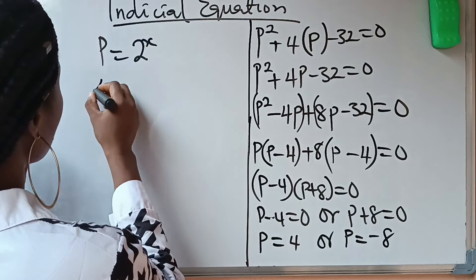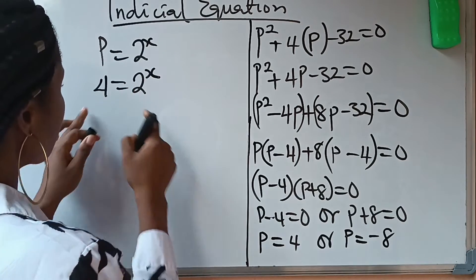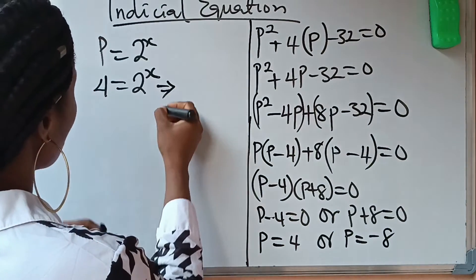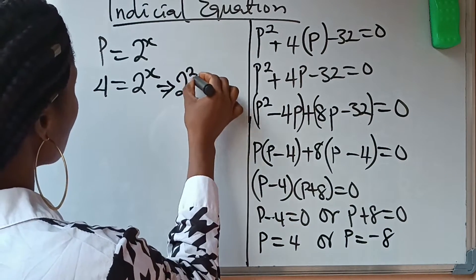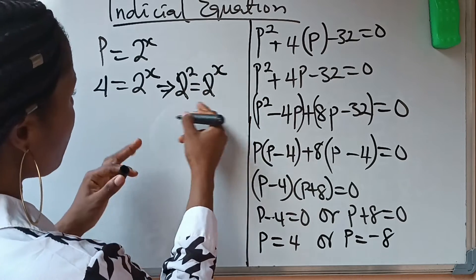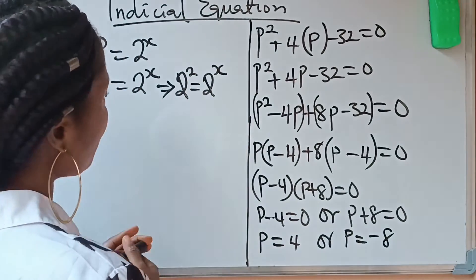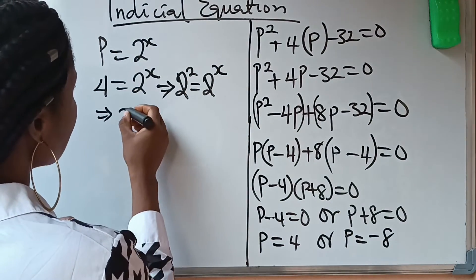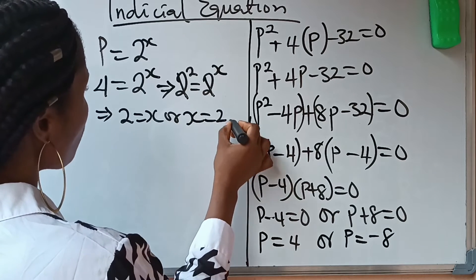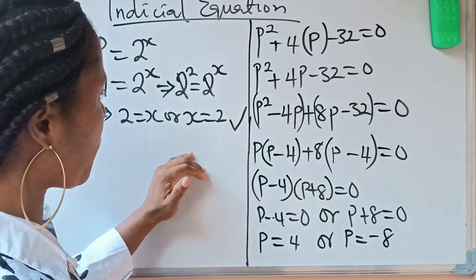Starting with p equals 4: we say 4 equals 2 raised to the power of x. Putting 4 in base 2, this implies 2 raised to the power of 2 equals 2 raised to the power of x. Since we have the same base, we equate the powers: 2 equals x, or x equals 2. So we've gotten the value of one of our solutions.